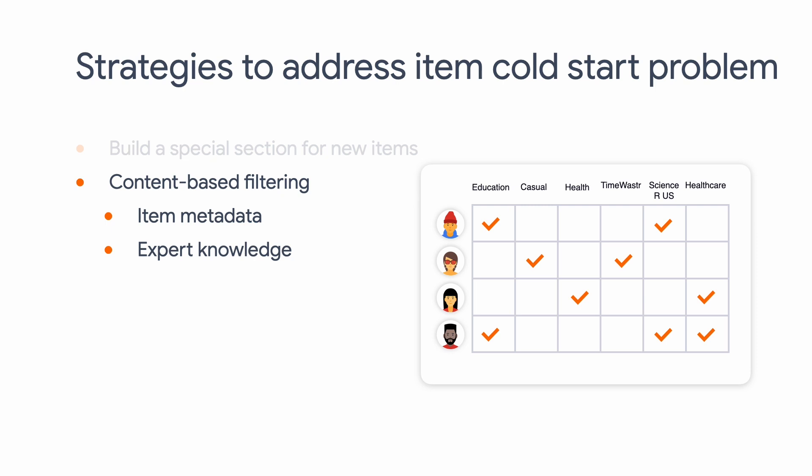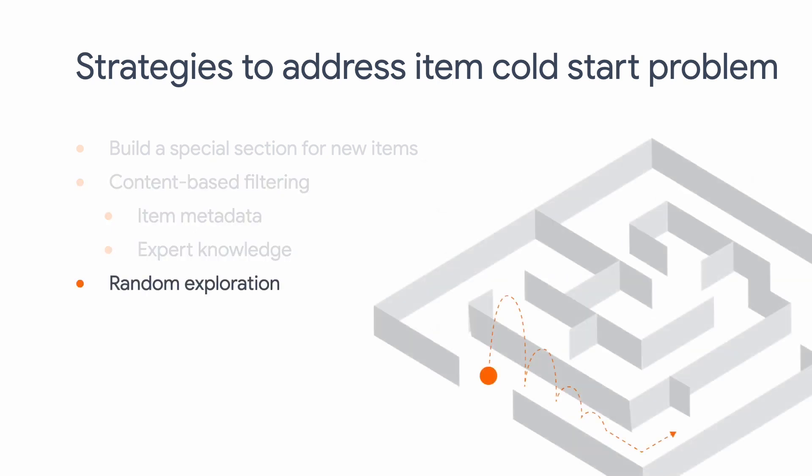Incidentally, real-world recommendation systems are often hybrid systems that consist of both content-based filtering and collaborative filtering, so content-based filtering is actually widely used. And as a last resort, you could just randomly show the new item to your users in the hope that some of them will interact with it — but this is usually not very effective and should be avoided if possible.